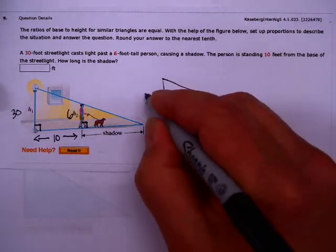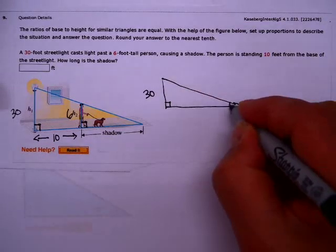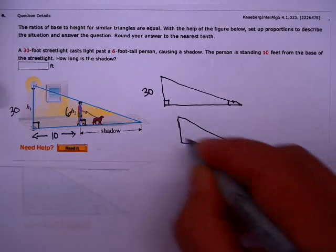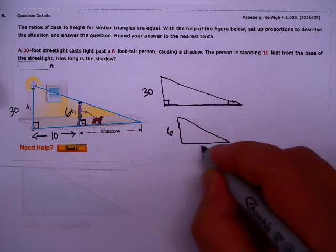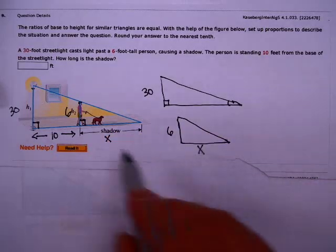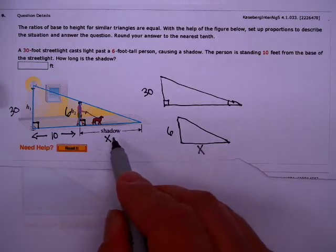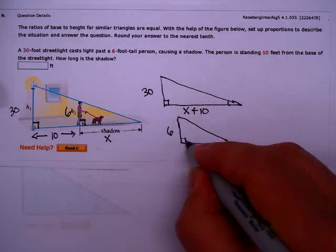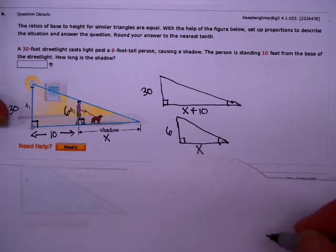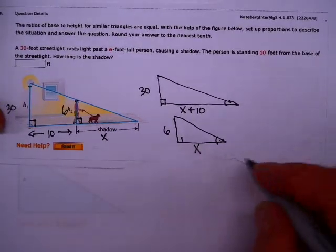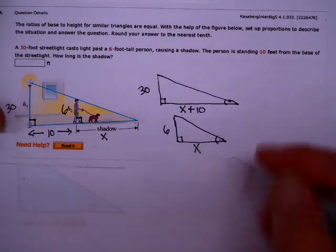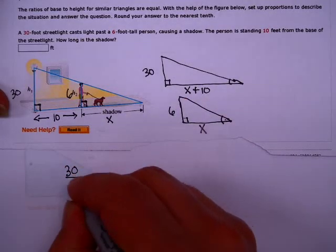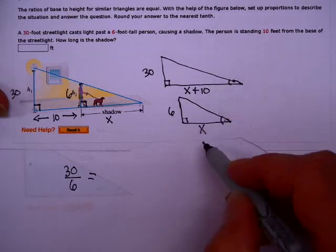I'm going to draw these triangles outside of the picture. Here's the streetlight triangle. It's 30 feet. You have a right angle here and you have this angle here. And here's the person triangle, and that's 6 feet. And you have the shadow here. I'm going to call the shadow X. If the shadow is X, how long is this side? Well, it's X plus 10. These two triangles are similar because they both have a right angle and they both share this angle. So they're two triangles with two angles the same. We can set up a proportion. It would be 30 over 6 equals X plus 10 over X.